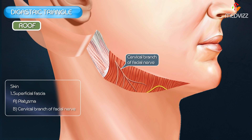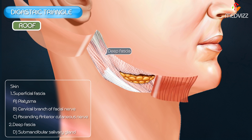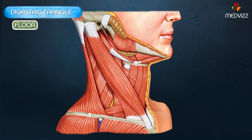The cervical branch of the facial nerve is also present at this location, as well as the ascending branch of the transverse or anterior cutaneous nerve of the neck, and finally the deep fascia, which splits to enclose the submandibular salivary gland.